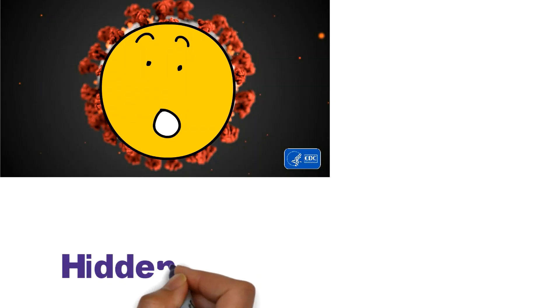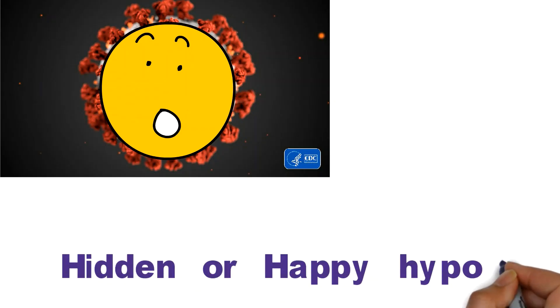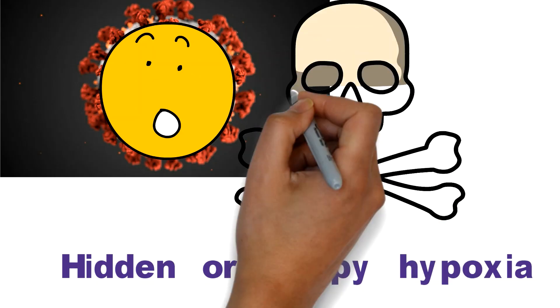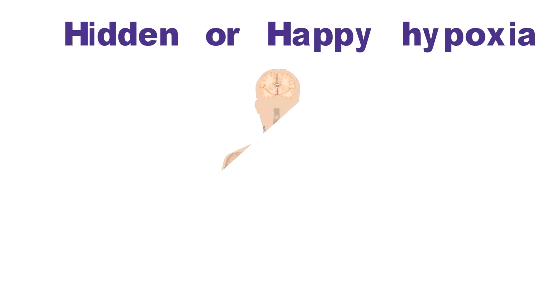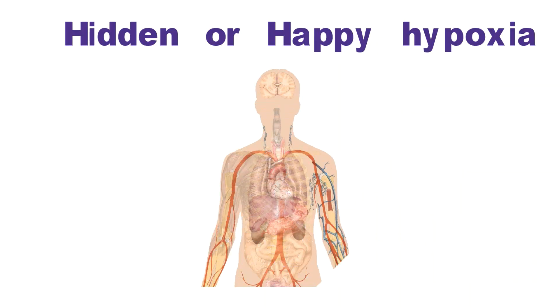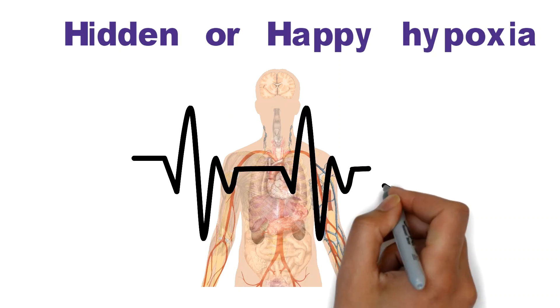Such hypoxia is known as hidden or happy hypoxia and can be life-threatening. It will not only damage lungs but other organs also. To identify it early can be life-saving.